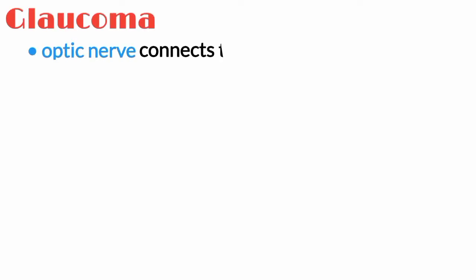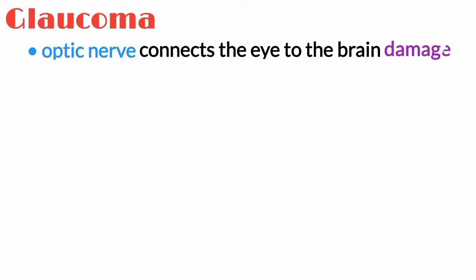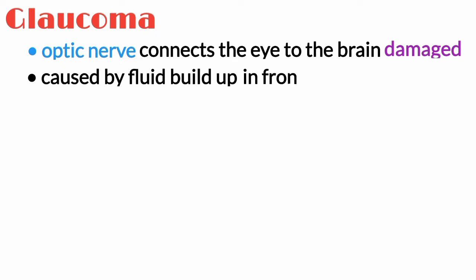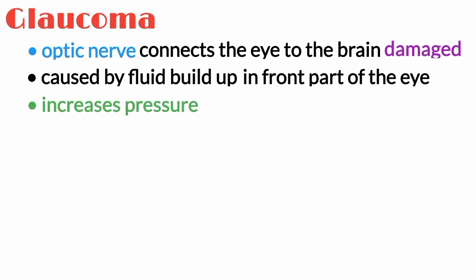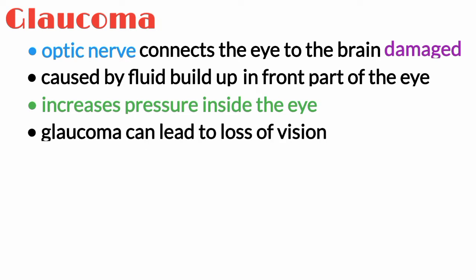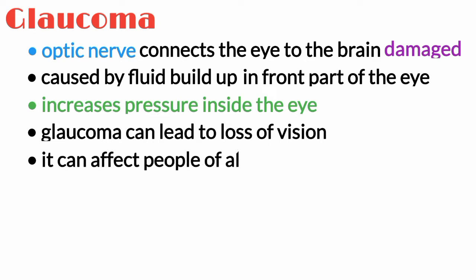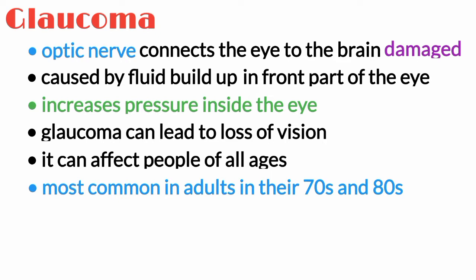Glaucoma is a common eye condition where the optic nerve, which connects the eye to the brain, gets damaged. It is usually caused by fluid building up in the front part of the eye, which increases pressure inside the eye. Glaucoma can lead to loss of vision if it's not diagnosed and treated early. It can affect people of all ages, but is most common in adults in their 70s and 80s.